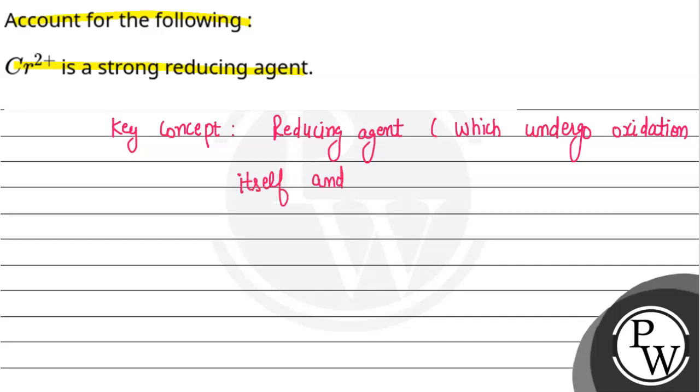A compound undergoes oxidation itself and reduces other species. So we can say that a reducing agent is something which undergoes oxidation and reduces other species. Now we are given a statement: Cr²⁺ is a strong reducing agent.